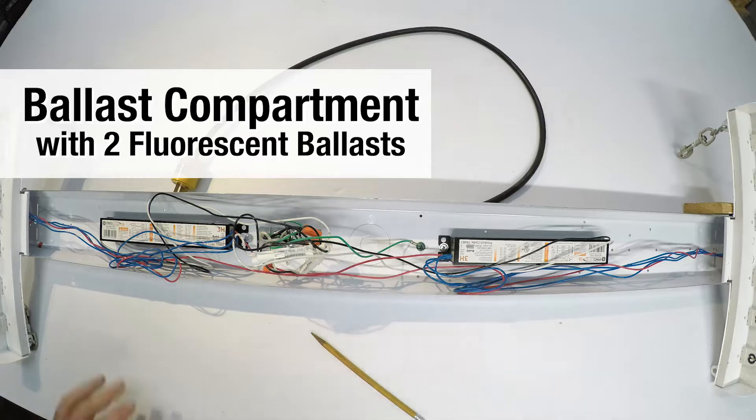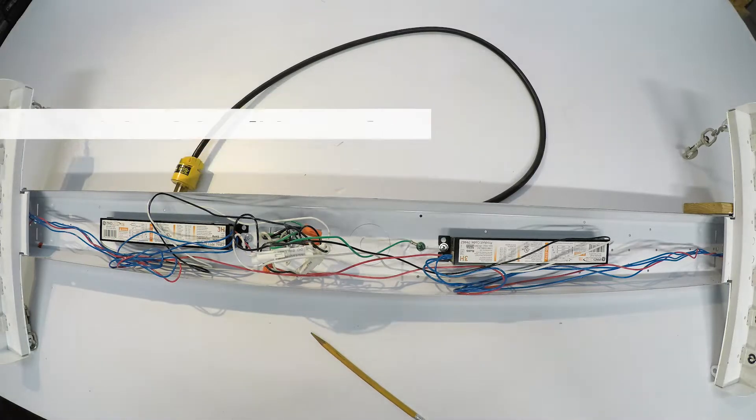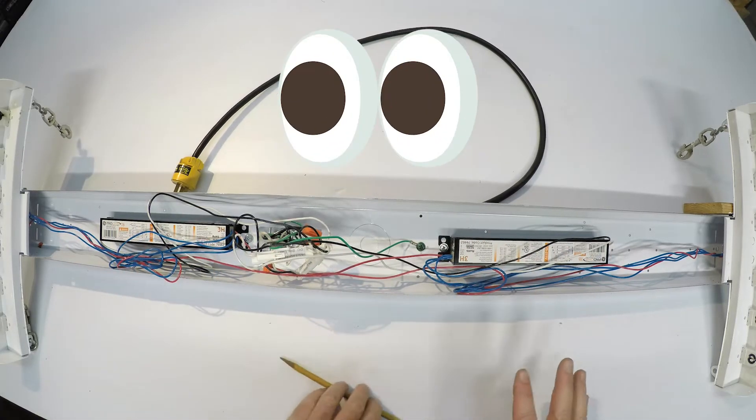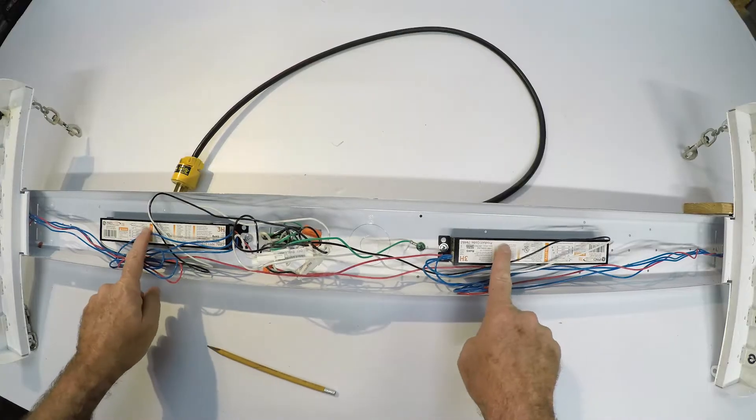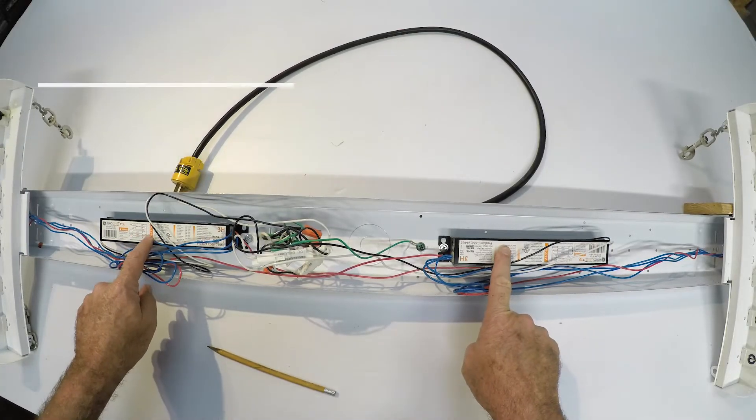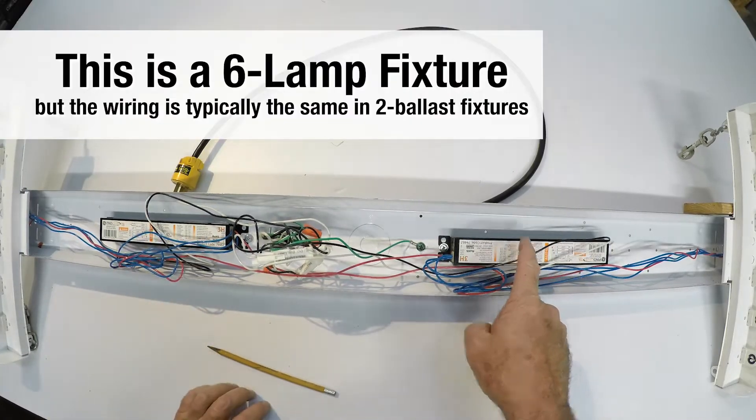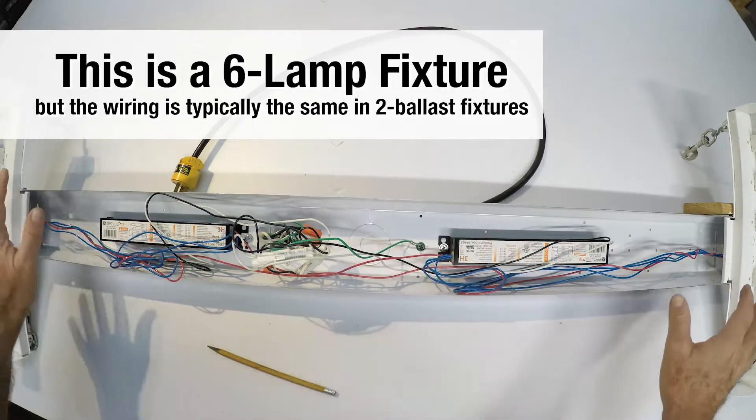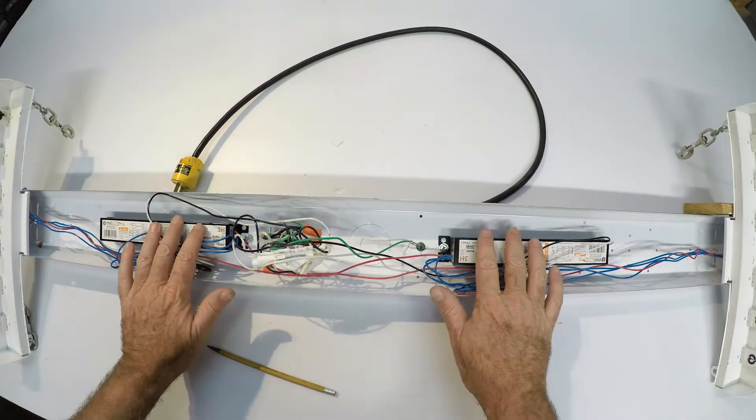We flipped it over and we're exposing the ballast compartment, just going to take a look at what we got. Now we have two ballasts in this light fixture because each one of them does three light bulbs. So to have six light bulbs total, you have to have two of them.